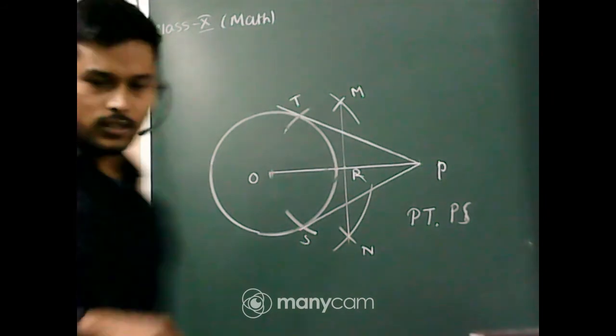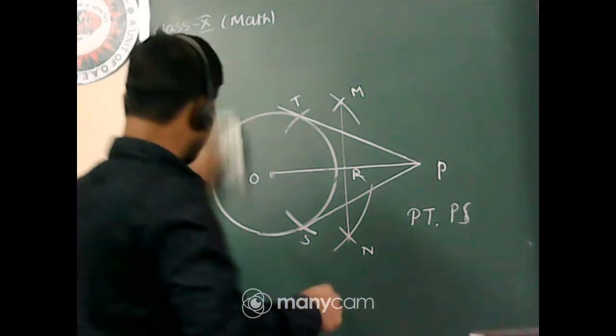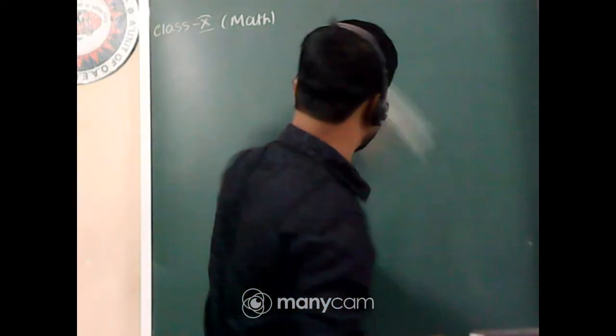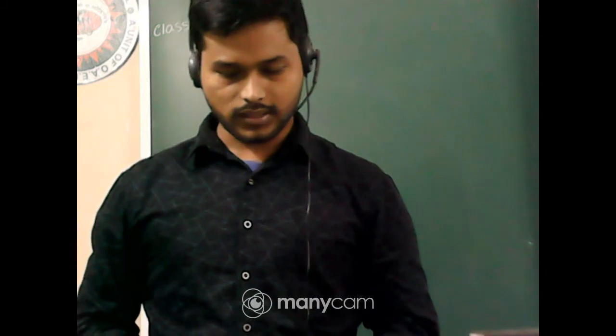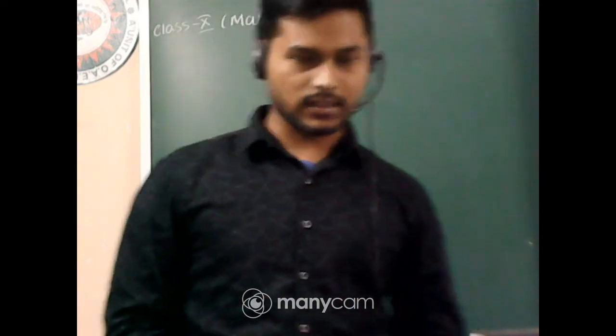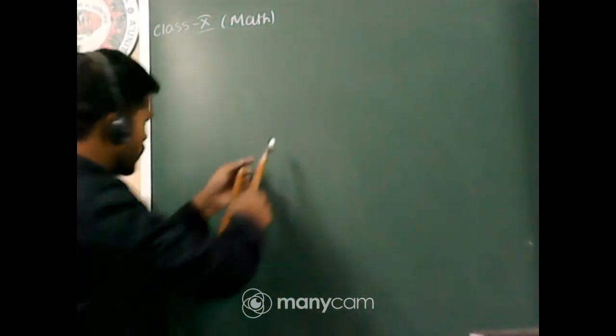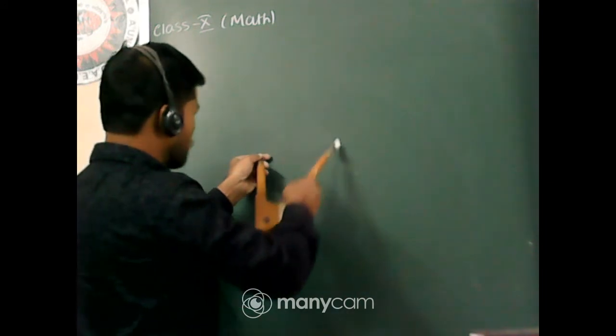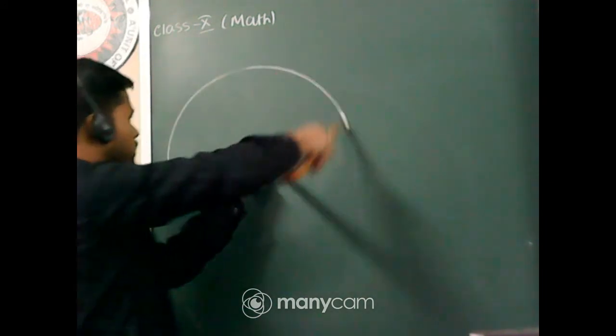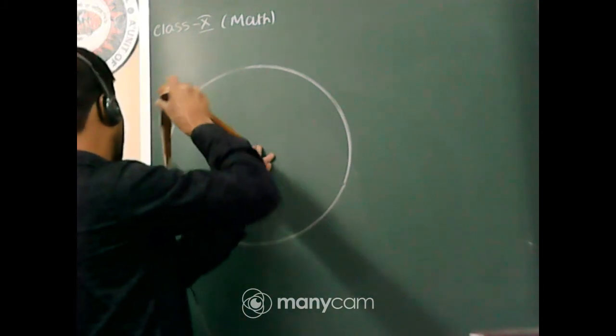Let's go to the exercise. The first question is: draw a circle of radius 6 centimeters, from a point 10 centimeters away from the center, construct a pair of tangents to the circle and measure their length. First, draw a circle of radius 6 centimeters. Let this circle have center O.